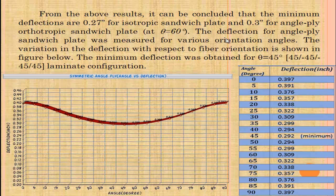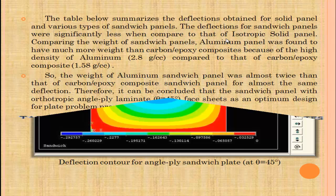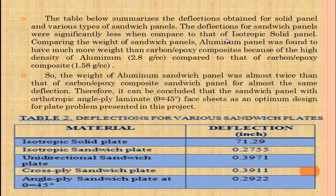From the above results, it can be calculated that the minimum deflection is 0.27 inches for the isotropic sandwich plate and 0.3 inches for the angle-ply orthotropic sandwich plate at 60 degrees. The deflection for the angle-ply sandwich plate was measured for various orientation angles. The minimum deflection was obtained for theta equals 45 degrees laminate configuration. Deflection for the angle-ply sandwich at 45 degrees is 0.2927 inches.